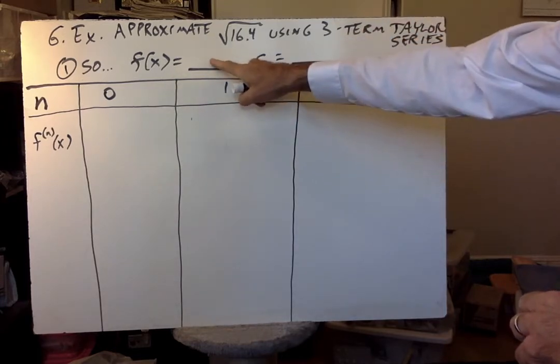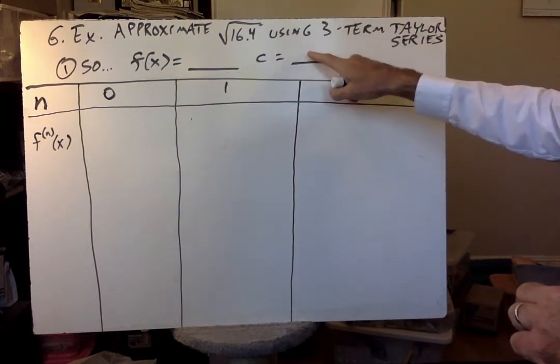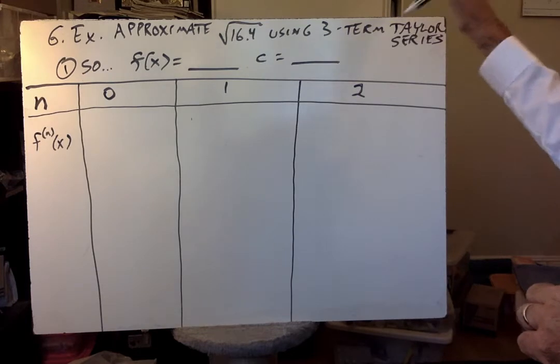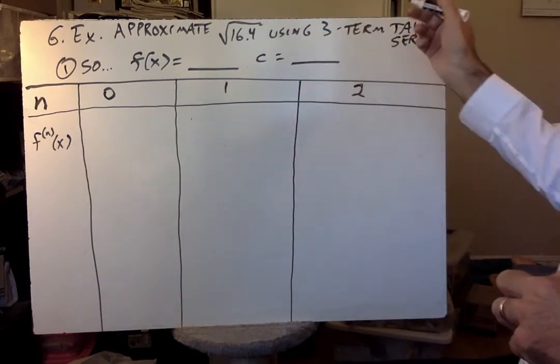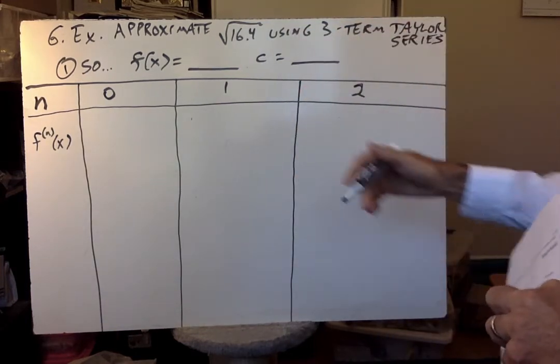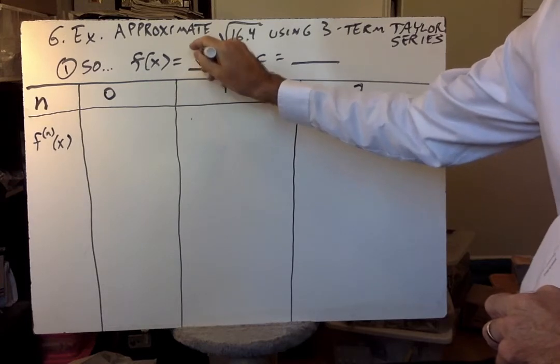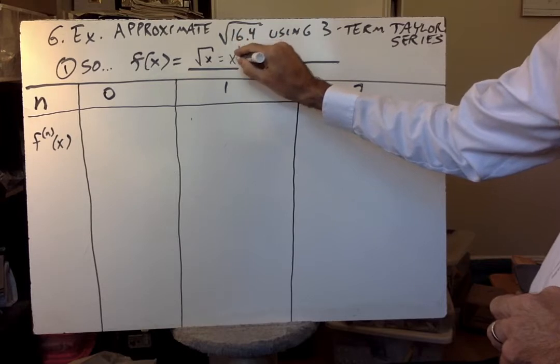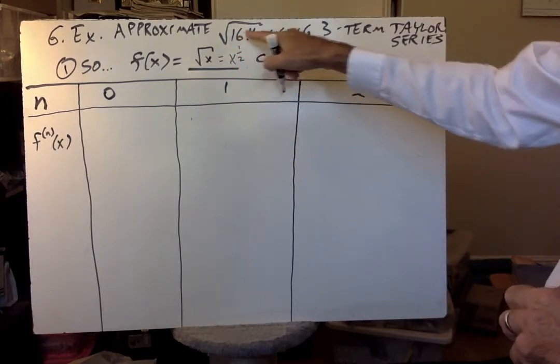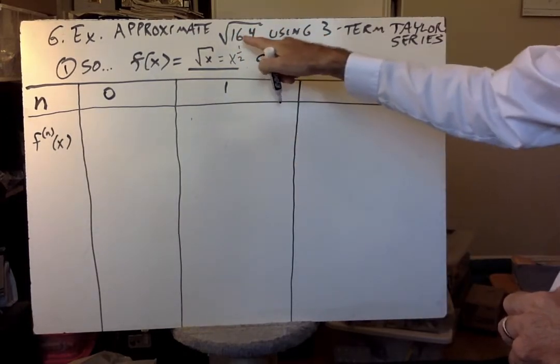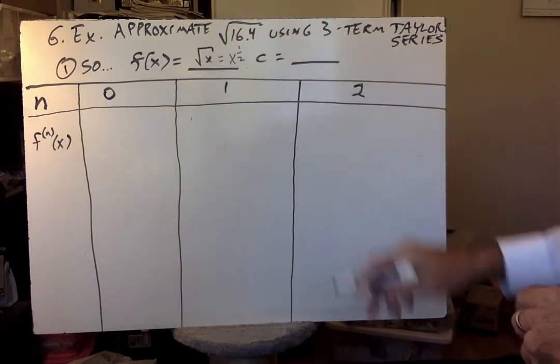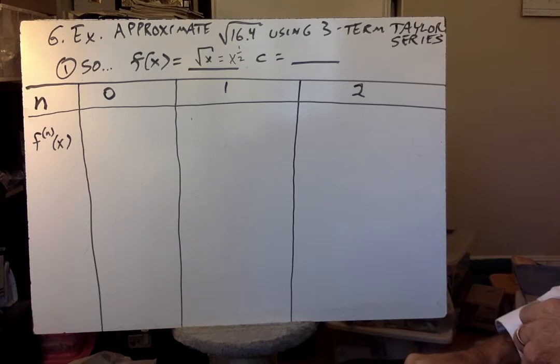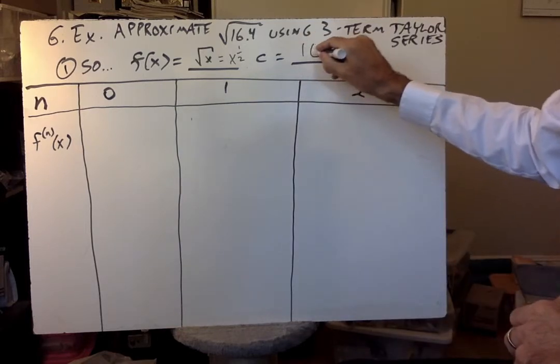So write what the function would be, f(x), and then write what the c would be. The function here will be the square root of x. Since we have to take derivatives, we want to keep in mind that means x to the one-half. That's the function. And then you find the value nearest to 16.4 where it's easy to take the square root and easy to find the subsequent derivatives. And obviously that's 16.